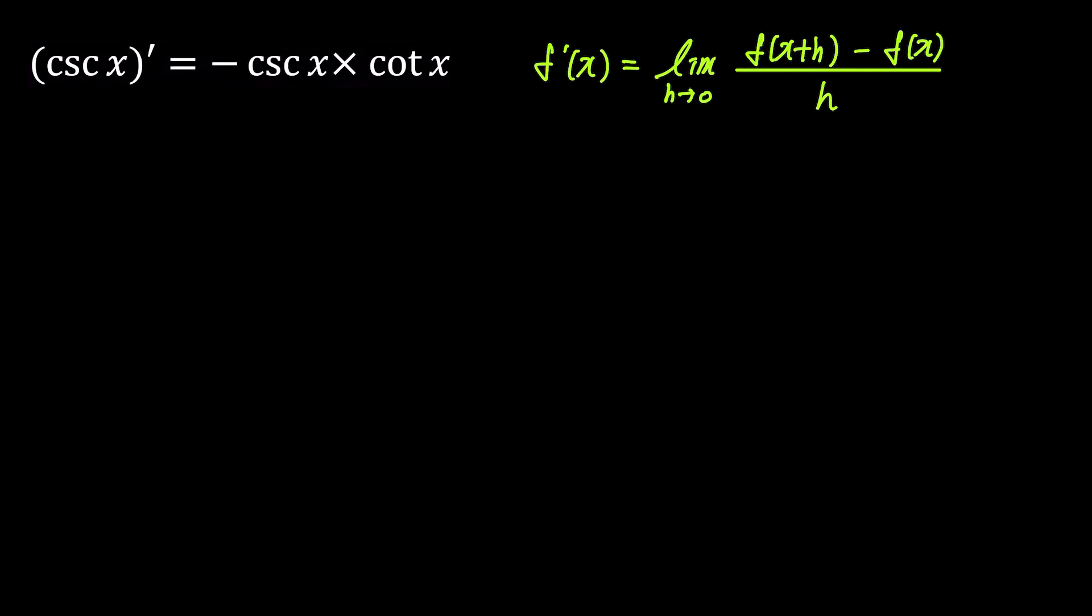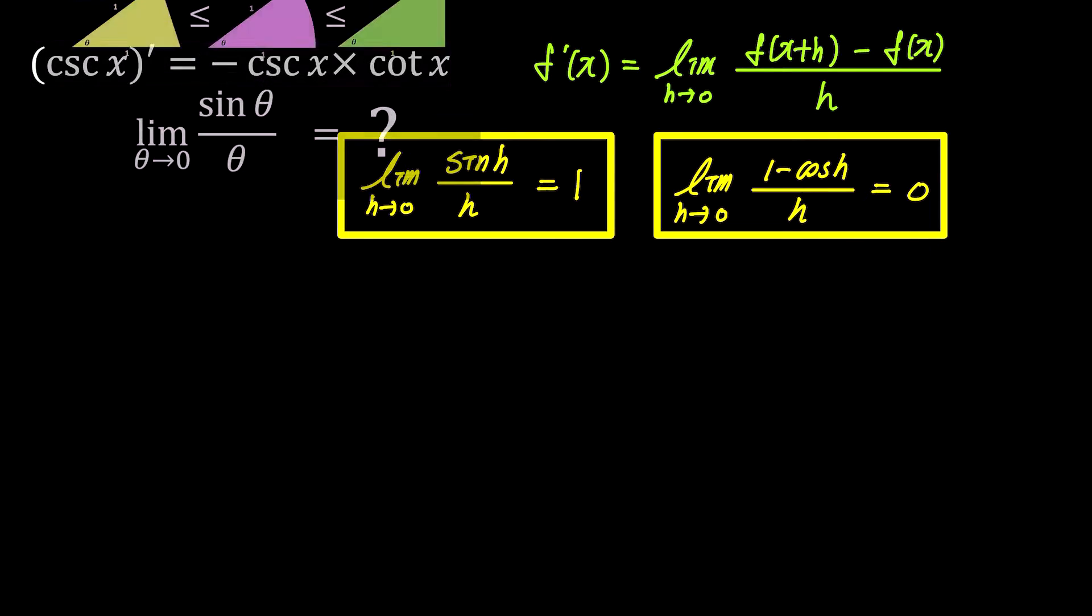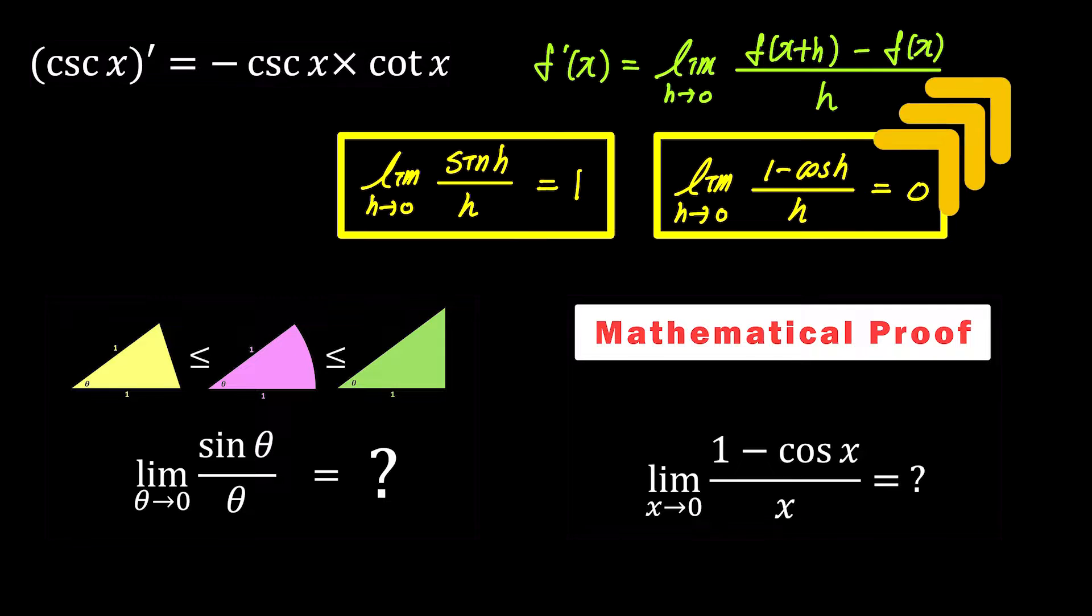To prove this, we'll need to utilize two results established in previous videos. The first is that as h approaches 0, the limit of sine h over h is 1. And the second is that the limit of 1 minus cosine h over h is 0. If you want to learn more about these, check out the videos in the top right corner.